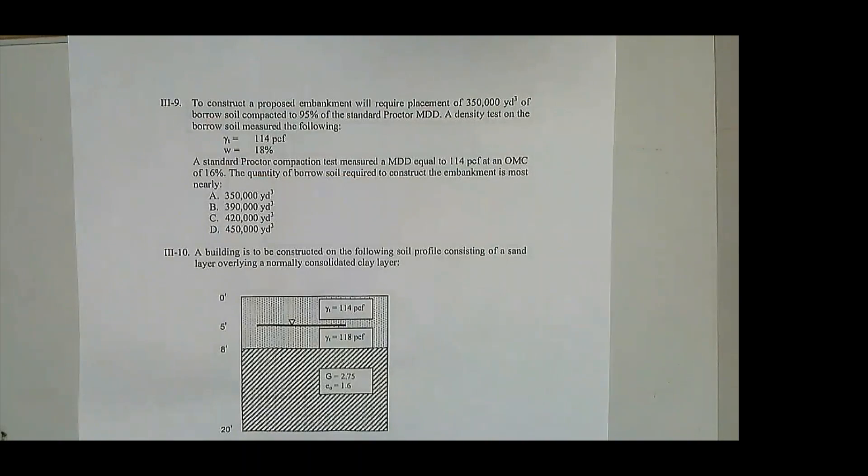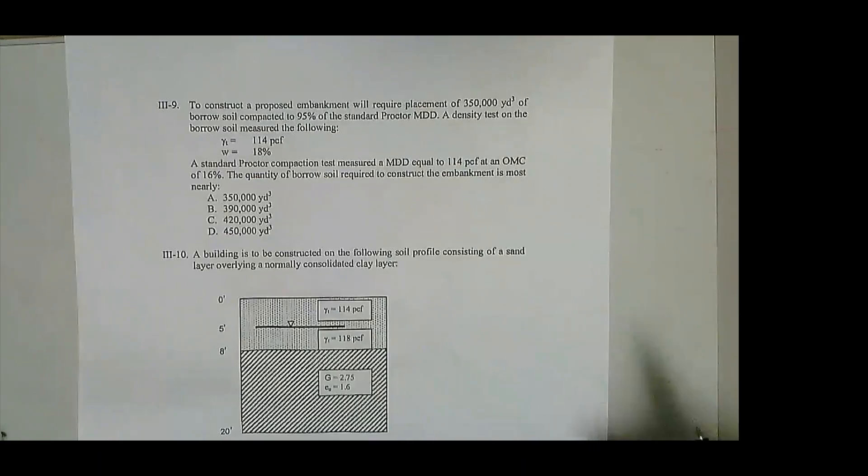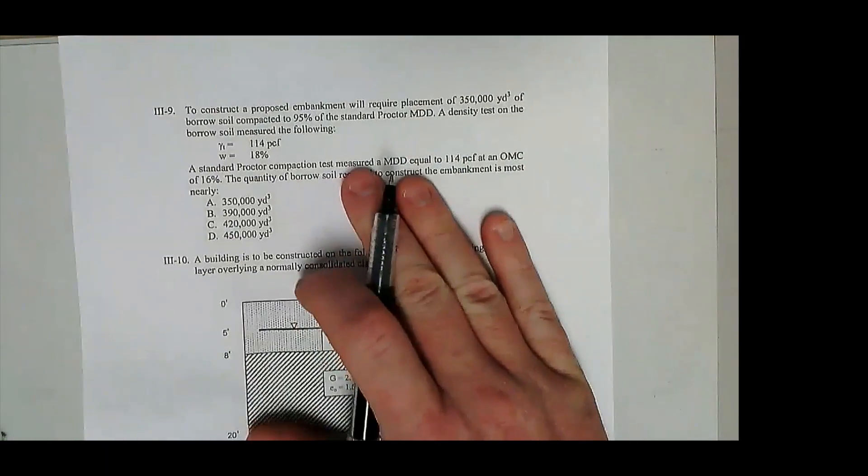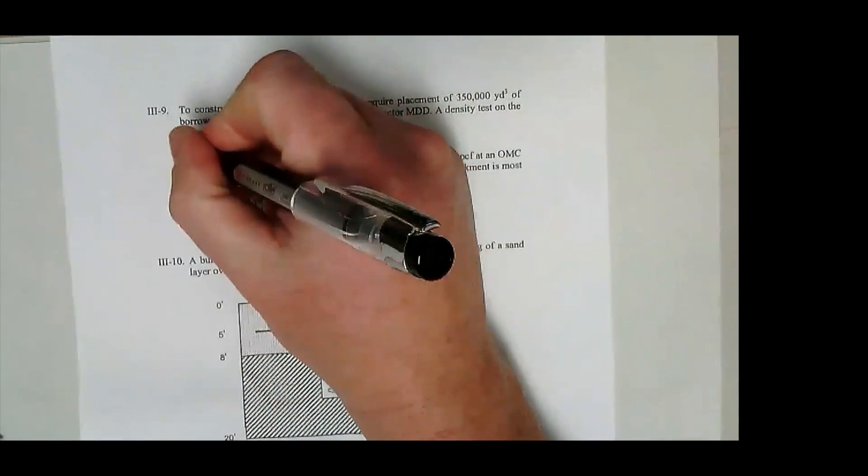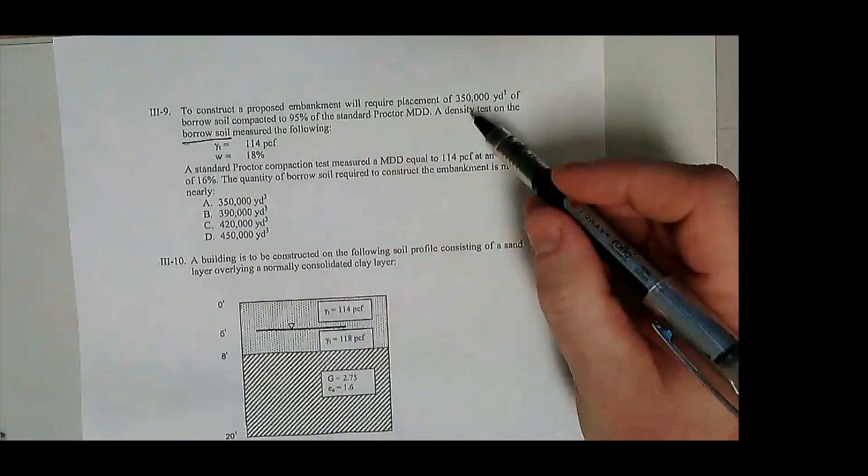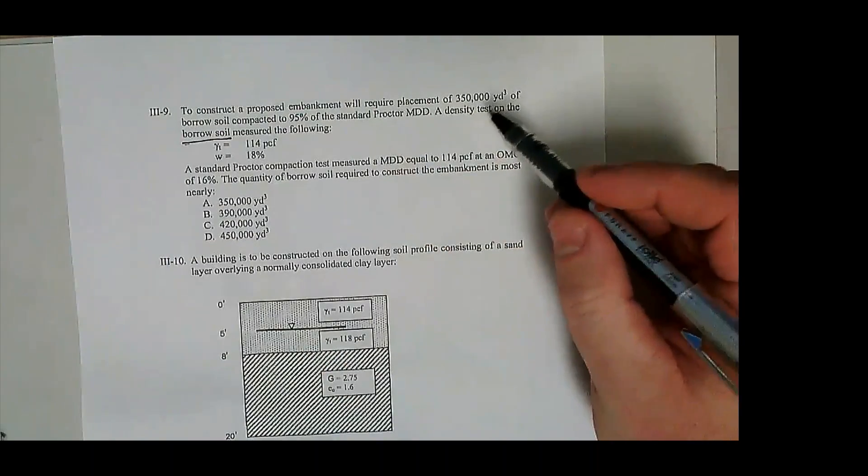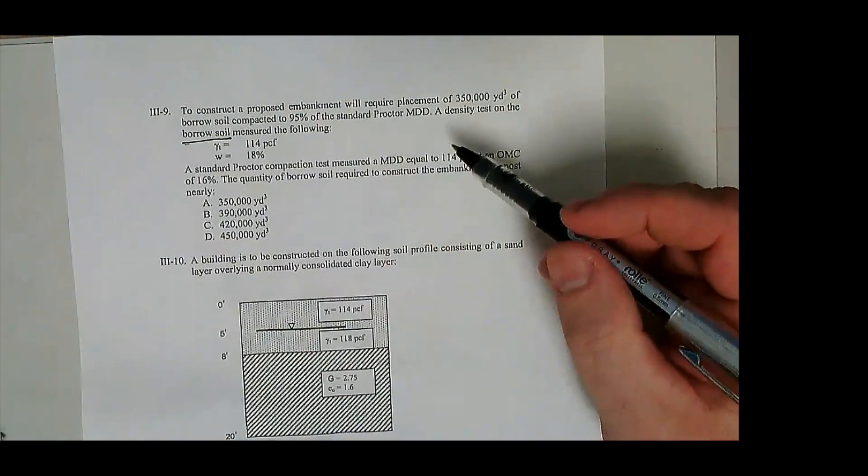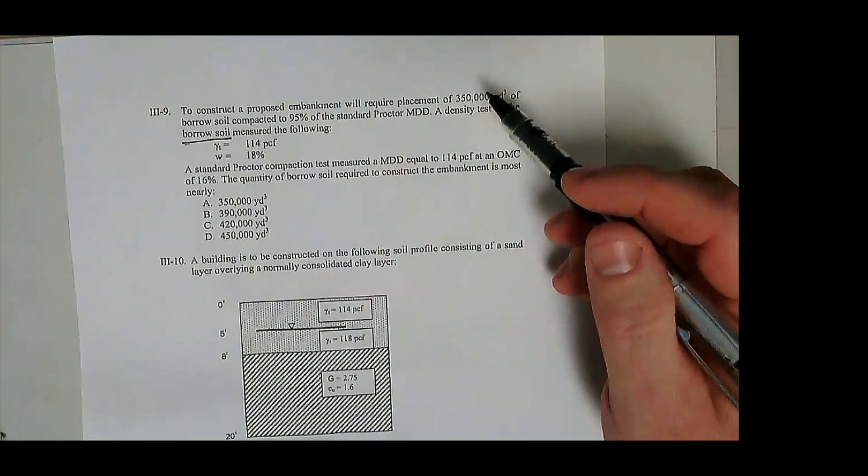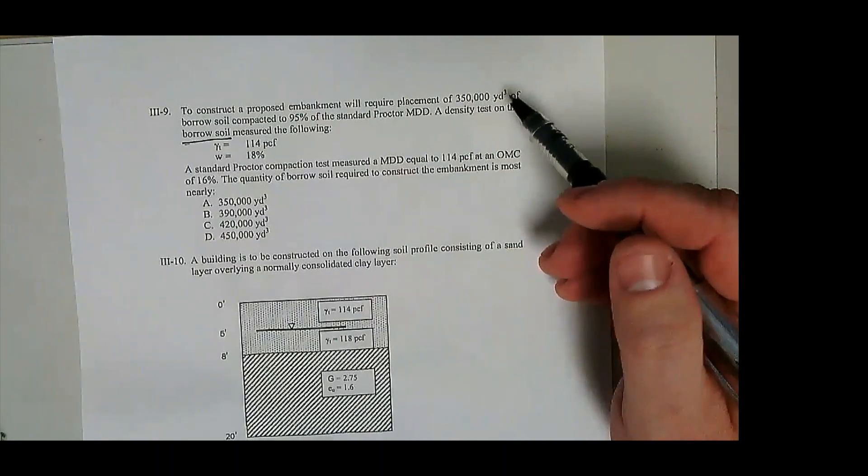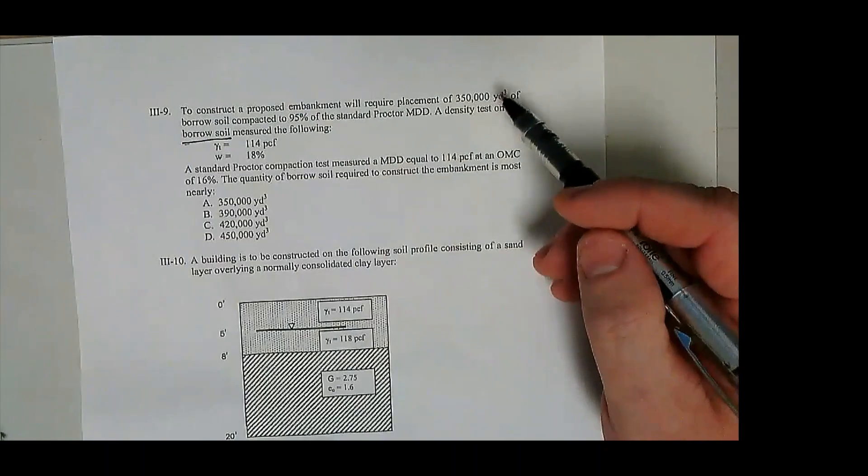It's compacted to 95% relative compaction according to the standard proctor density test. On the borrow soil, measured the following. So this is important to understand the sequencing here. Borrow soil density means you're measuring the density of the soil at some other place. So you're going to dig that soil up from that place, haul it somewhere, and then recompact it to a different volume.